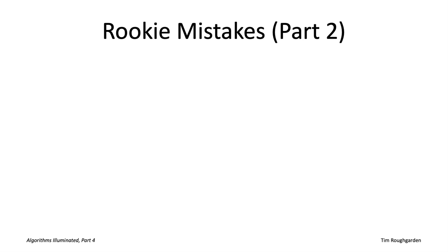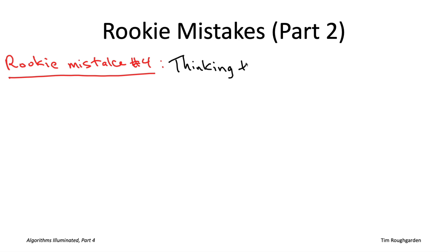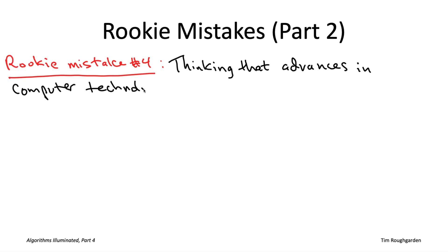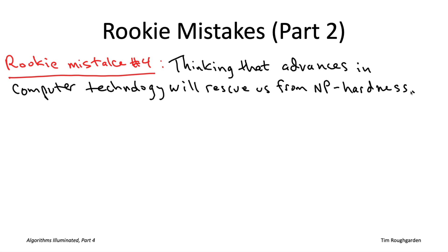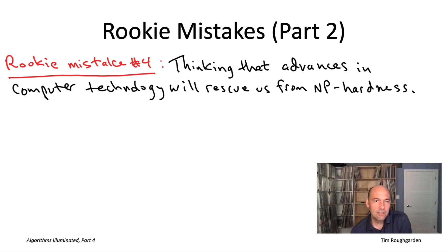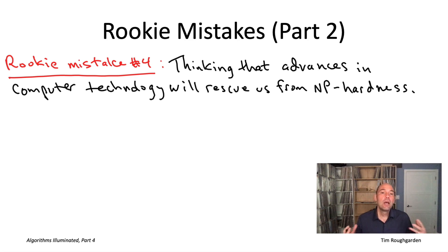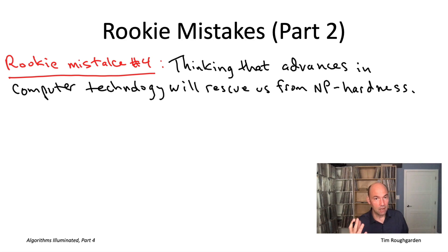Rookie mistake number four is assuming that because computers keep getting faster, problems that are hard today will be easy tomorrow. Advances in computing technology and Moore's Law actually make the theory of NP-hardness even more relevant. As our computing power scales, so does the size of problems we're interested in solving. The bigger the problems, the bigger the gulf between polynomial and exponential running time. So as technology gets better, NP-hardness becomes more relevant than ever.